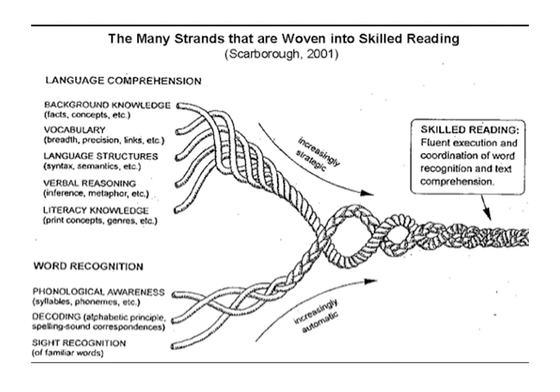We also have to pull apart the strands for skilled reading. This is Holly Scarborough's 2001 model, which pulls apart language comprehension strands including background knowledge. For example, when I took the LSATs, one passage was about Ella Fitzgerald, whose music I love — I answered those questions easily. Another passage was about the viscosity of lava flow in Hawaii, a term I didn't know, and my comprehension was much more limited because I lacked background knowledge and that vocabulary.